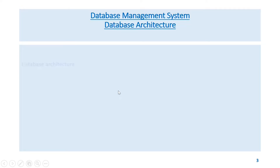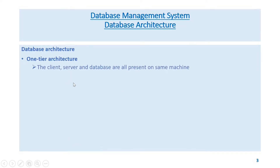Database architecture: One-tier architecture — the client, server, and the database are all present on the same machine. The user can directly access the database.